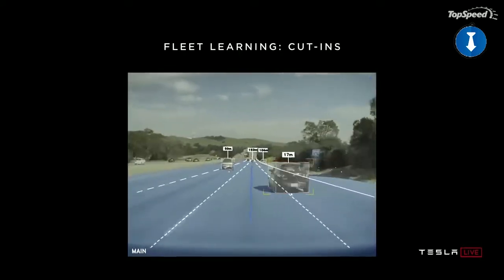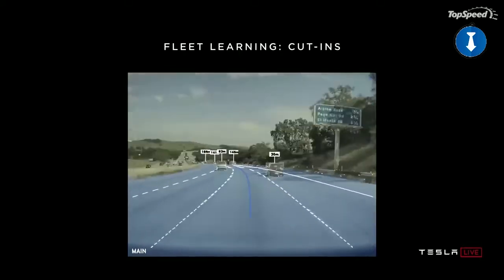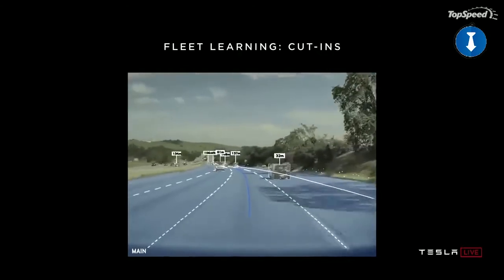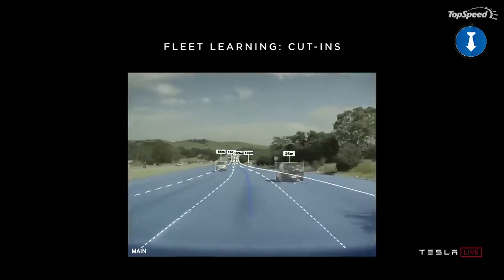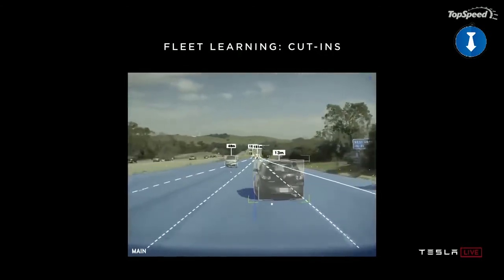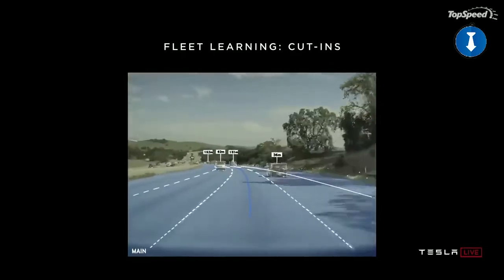What we do is rewind time backwards and automatically annotate that that car will, in 1.3 seconds, cut in front of you. And then we can use that for training the neural net.